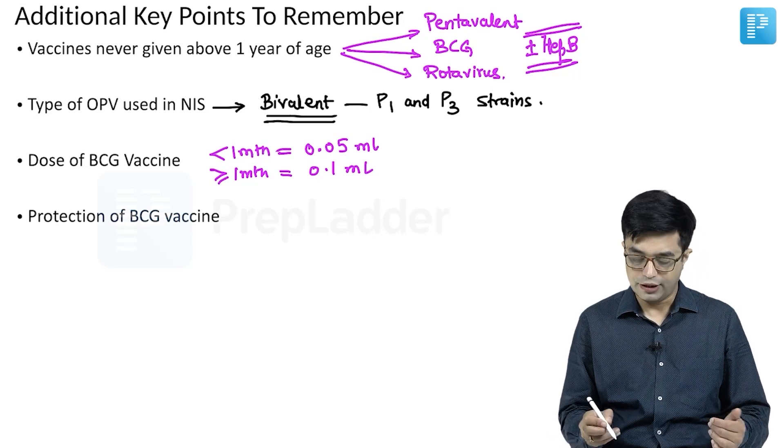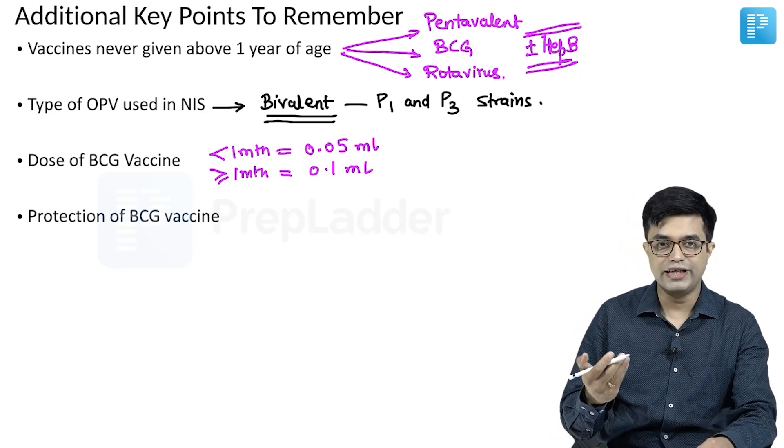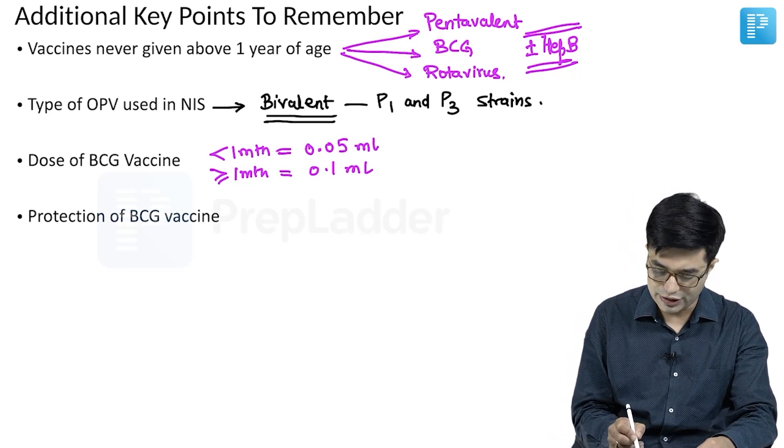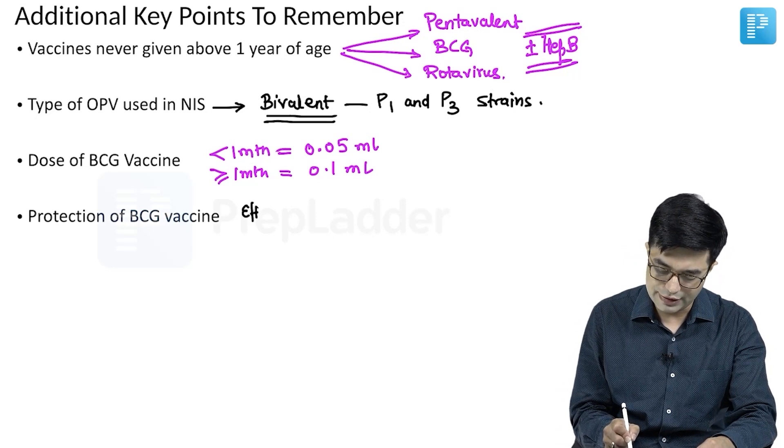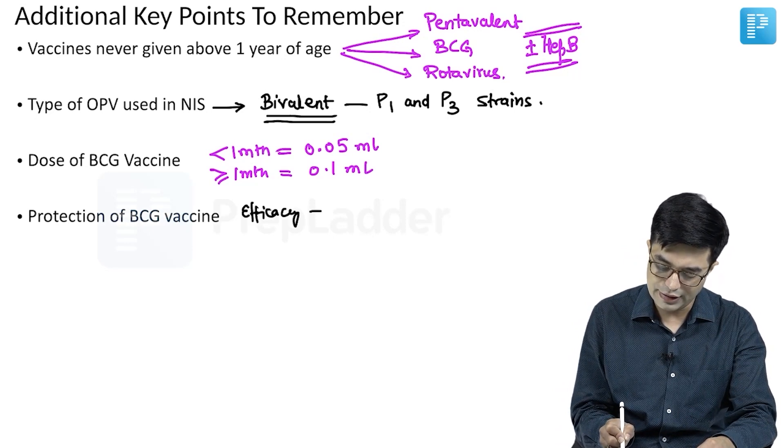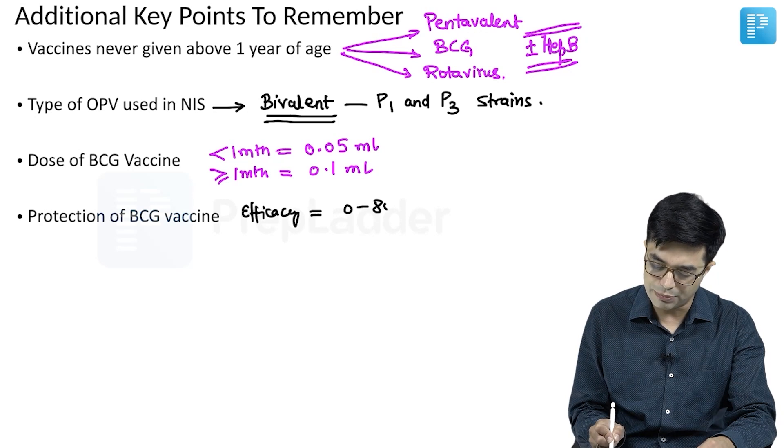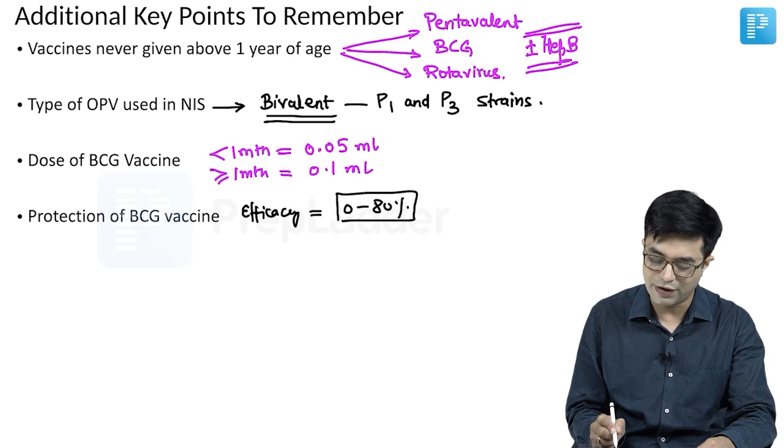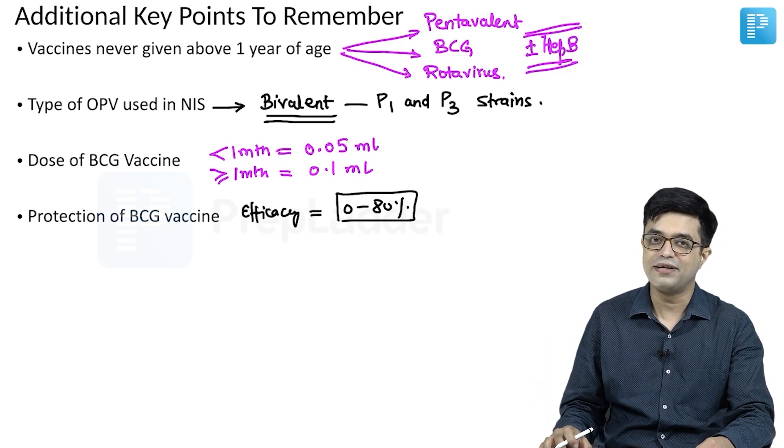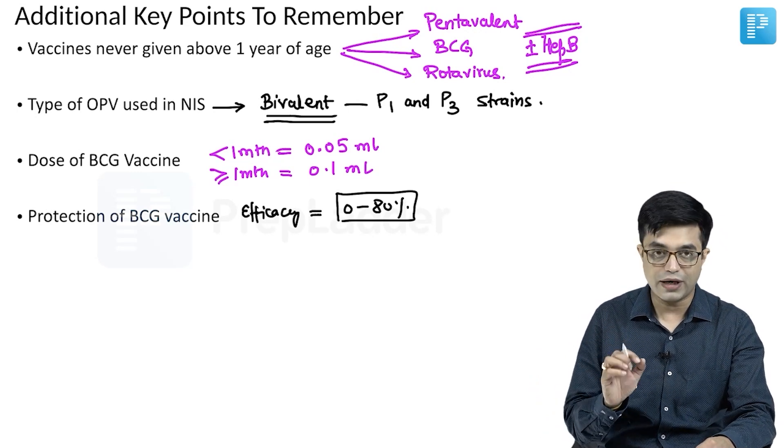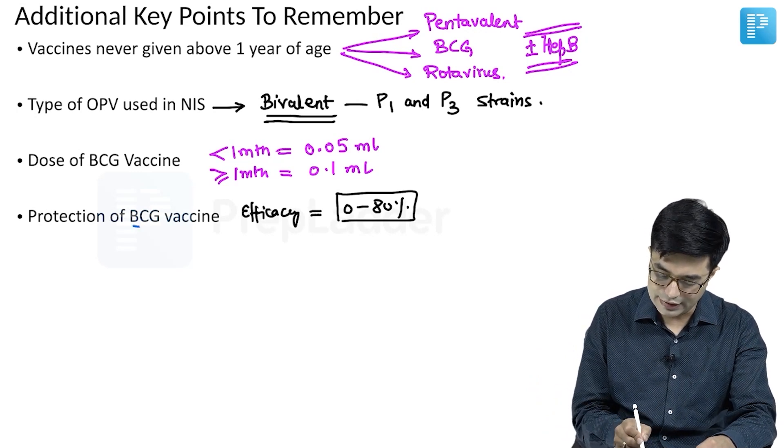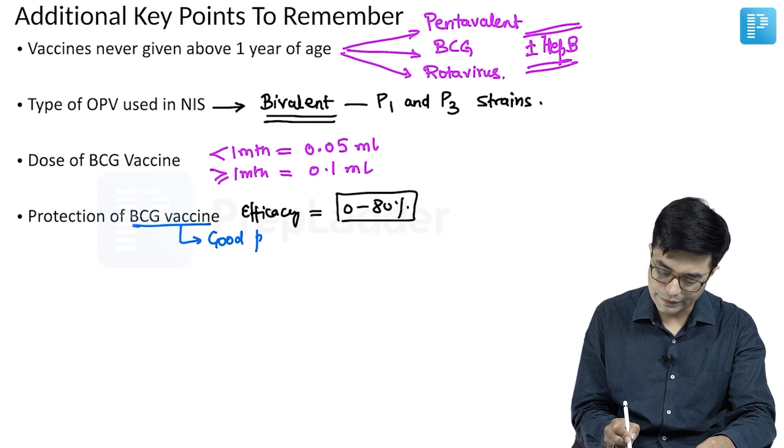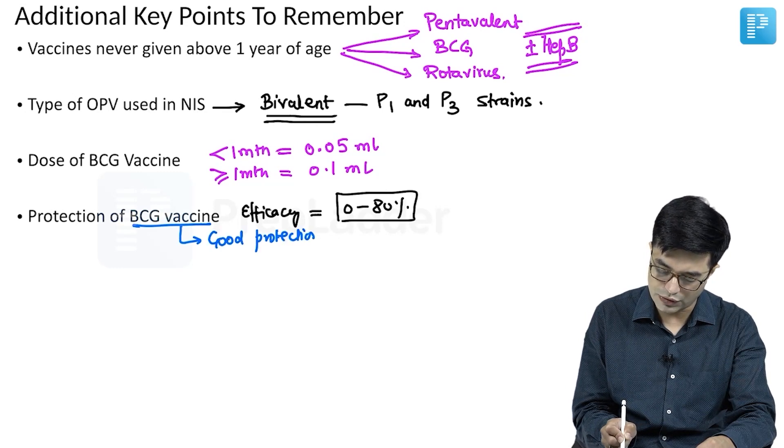What is the protection of BCG? Indian textbooks give the protective efficacy of BCG ranging between 0 to 80 percent. So there is a very widespread protection range given by BCG. You need to understand that BCG vaccine gives good protection against two forms of tuberculosis.